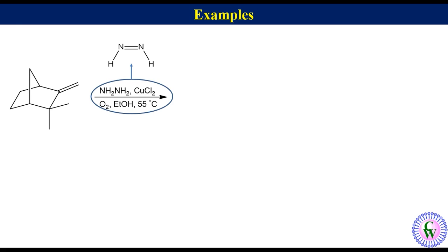Now, we will discuss examples. Let's take the example of reduction of 2,2-dimethyl-3-methylene norbornane with hydrazine in the presence of cupric chloride and oxygen in ethanol. We have just learned that under the given reaction conditions, there will be generation of diimide reactive intermediate.